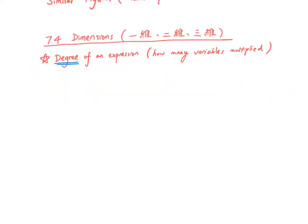First talking about dimensions, we mentioned before that for dimensions you should associate it with degree of an expression. So what is a degree? The degree means how many variables are multiplied together. Variables are something that can change, so usually we use x, y, z to represent some lengths. They can be 5 cm, 6 cm, they can change, then we say that they are variables.